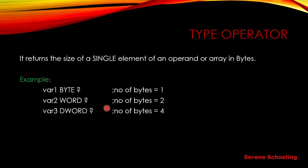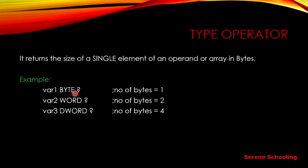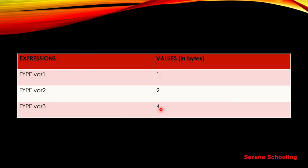That was the major concept for the TYPE operator. In the table, I have written some expressions and their values. TYPE variable1 returns one — because its type was BYTE and BYTE contains only one byte. TYPE variable2 is WORD so it returns two bytes, and the DWORD variable returns four bytes.